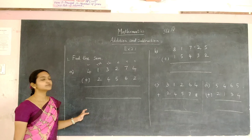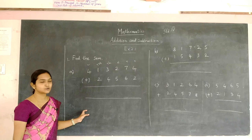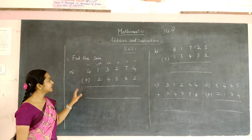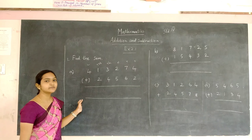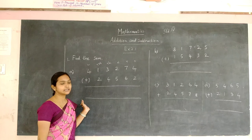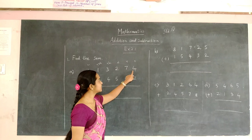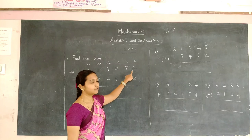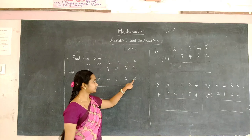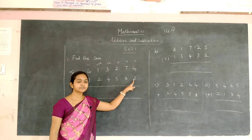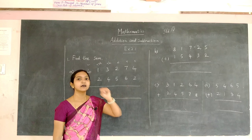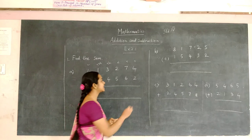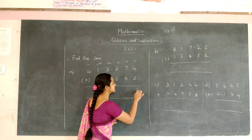We are going to solve exercise 2.1. The first problem is to find the sum. We are going to add the numbers. The first numbers are 4 and 2. After 4 you have to add 2, that is 5 and 6. So the answer is 6.